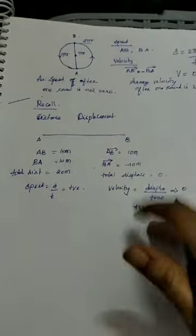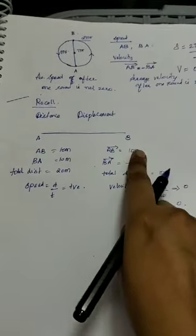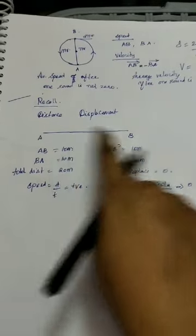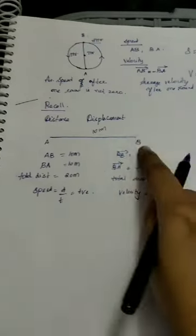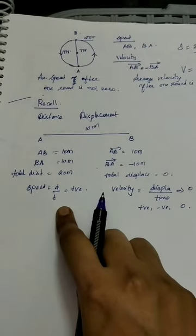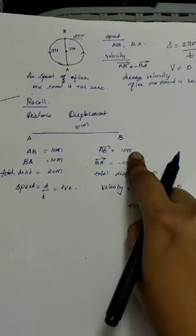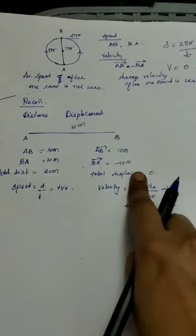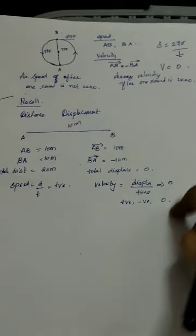To recall the difference between distance and displacement: if A to B is 10 cm and B to A is 10 cm, total distance is 20 cm and speed is positive. But for displacement, A to B is +10 and B to A is −10, so total displacement is zero and velocity becomes zero. This is what you must understand for circular path motion.